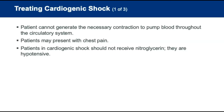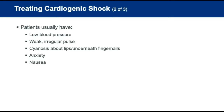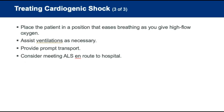For cardiogenic shock, which may result from a heart attack where the heart cannot generate the necessary power to pump, patients typically do not have an injury but may have chest pain. Patients with cardiogenic shock should not receive nitroglycerin if they are hypotensive. Signs include low blood pressure, weak or irregular pulse, cyanosis around the lips or under the fingernails, and anxiety and nausea. Place them in a position that eases breathing, give high-flow oxygen, and initiate prompt transport with advanced life support.